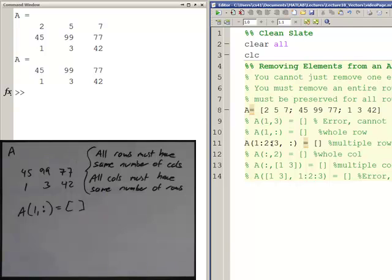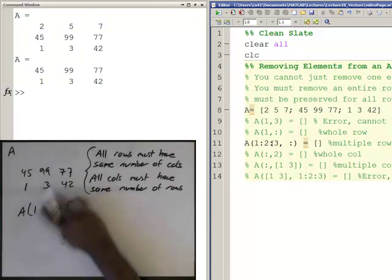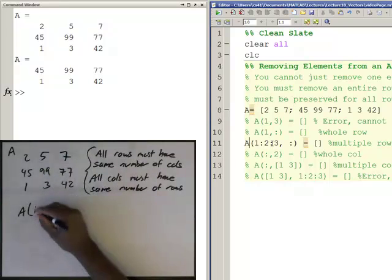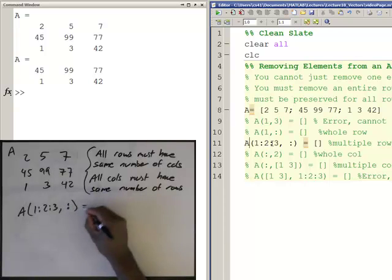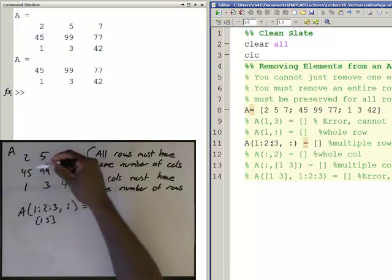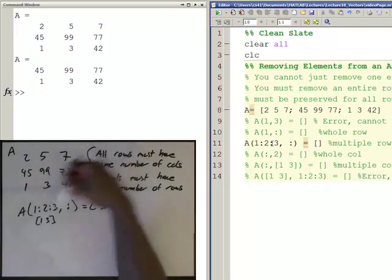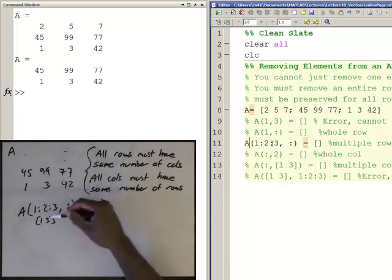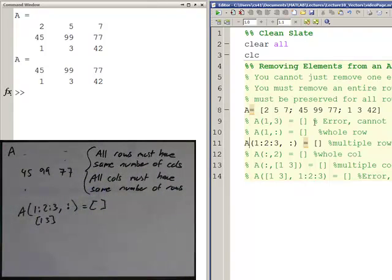This also works on multiple rows at a time. And so if I were to come in here, put that back, and I'm going to come in here and say A([1 3],:) equals the empty vector - that means that's the same as the vector [1 3] - so row one is going to get the empty, row one all columns gets the empty vector so that goes away, and row three all columns gets the empty vector, that goes away. And so you're left with, when you execute this one, you're left with the row 45 99 77.